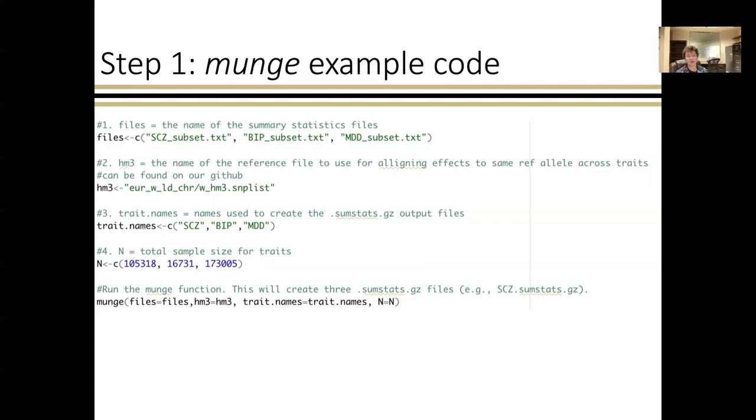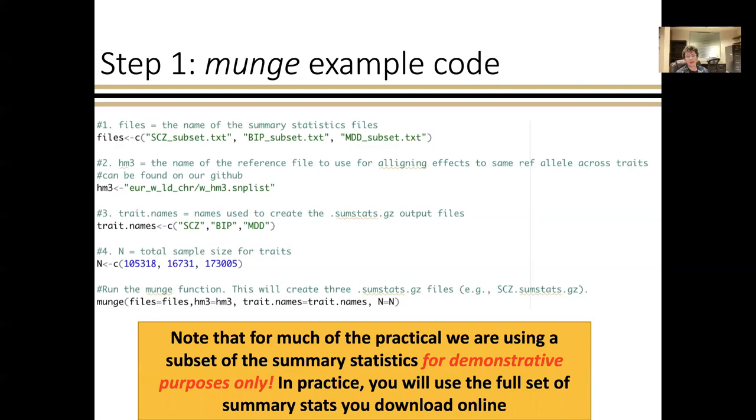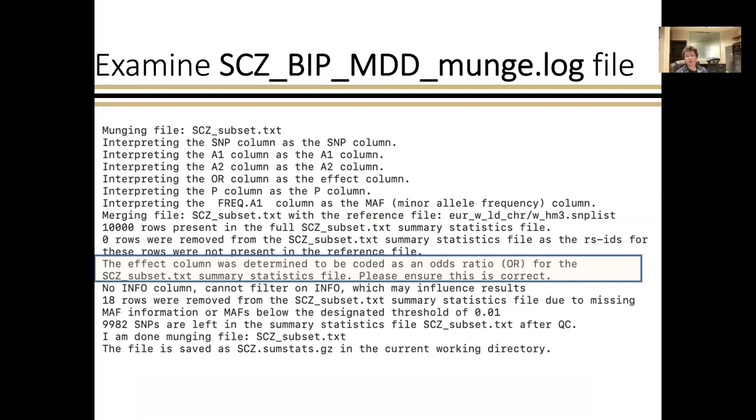Mung takes four arguments. The first is the name of the files. The second is a reference file that's used to align to the same reference allele across traits. Third is the name of the traits, and the fourth is the total sample size. Putting it all together in this last line where I'm specifying all these arguments and running Mung. Again, to really highlight that we are only using the restricted subset for the purpose of the practical.